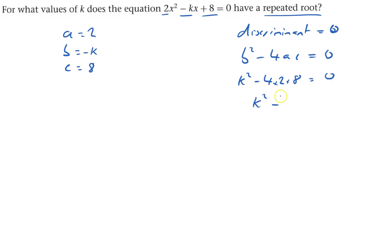So k squared minus 8 times 8 is 64 equals zero. So k squared equals 64.